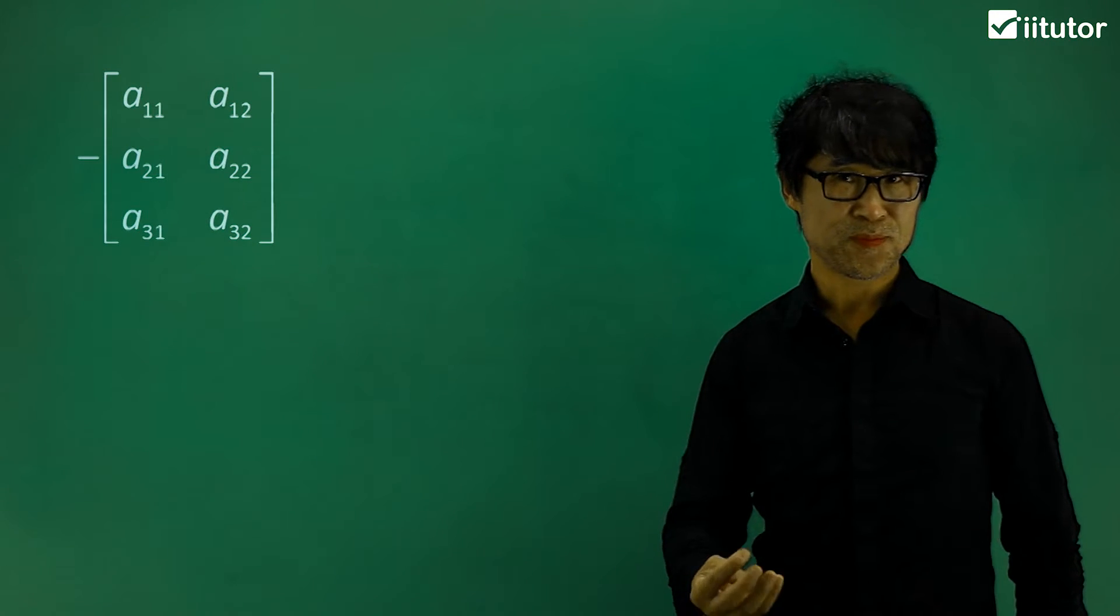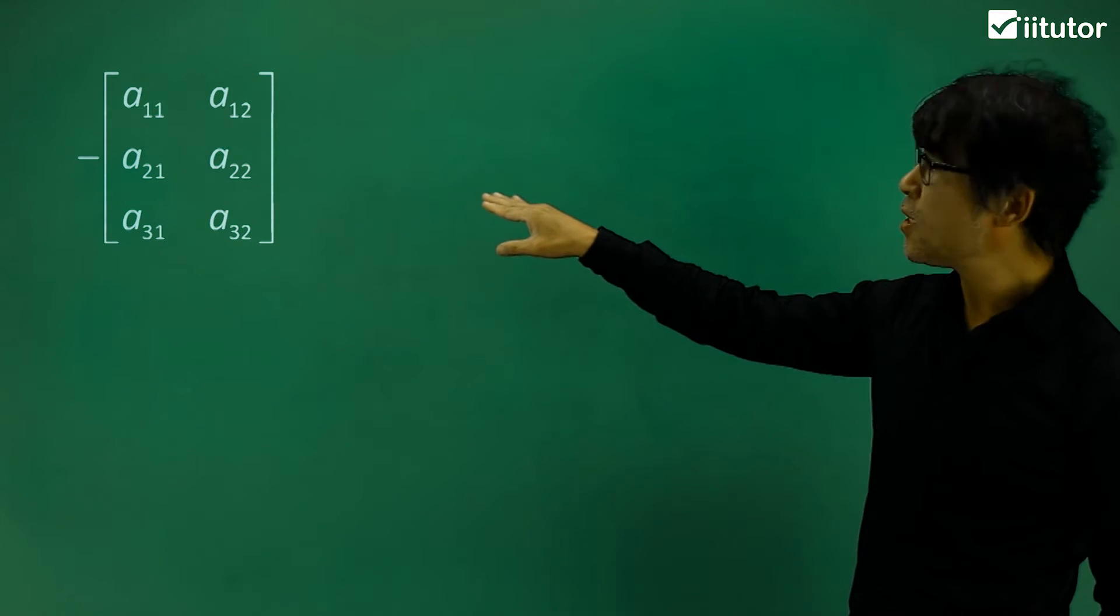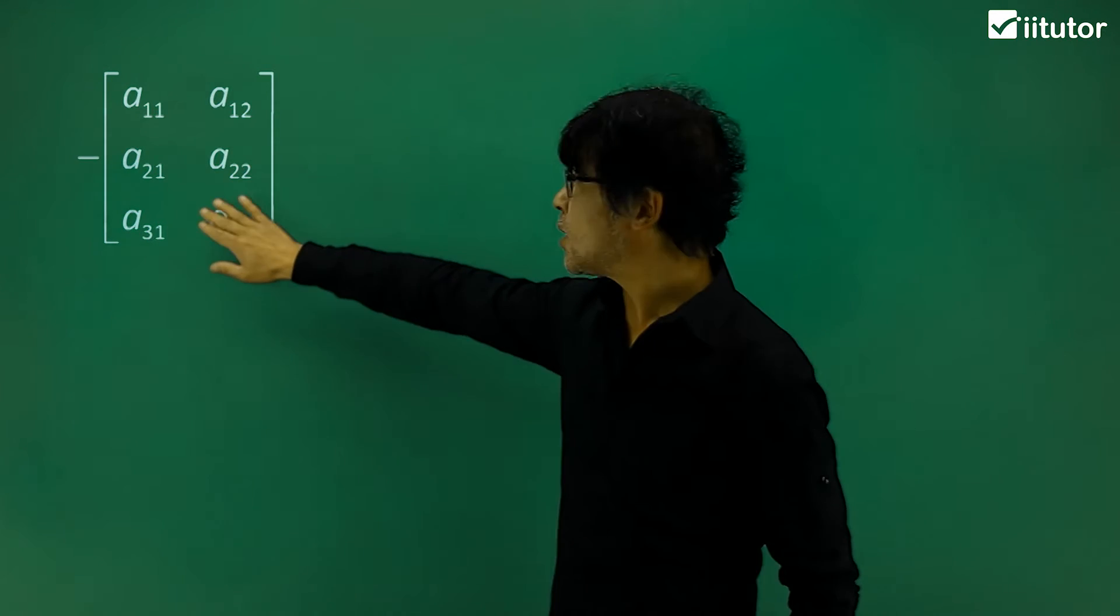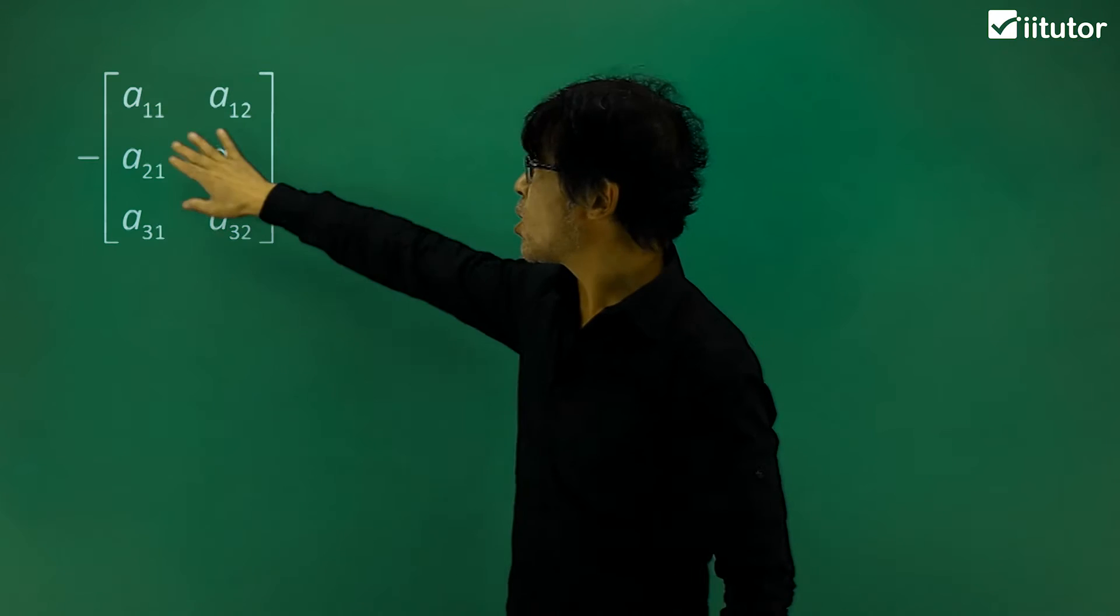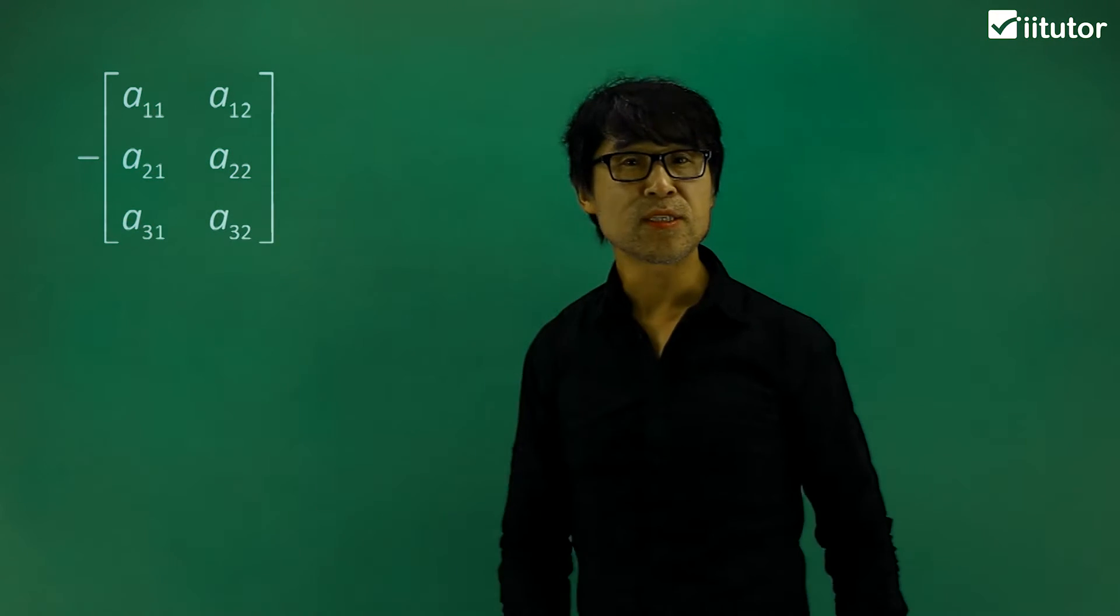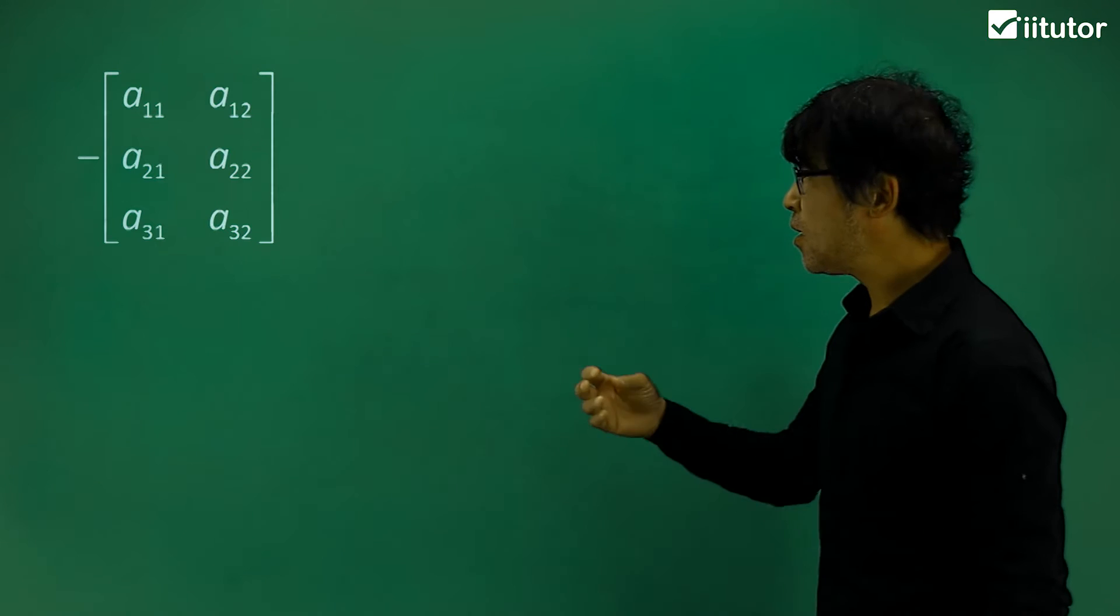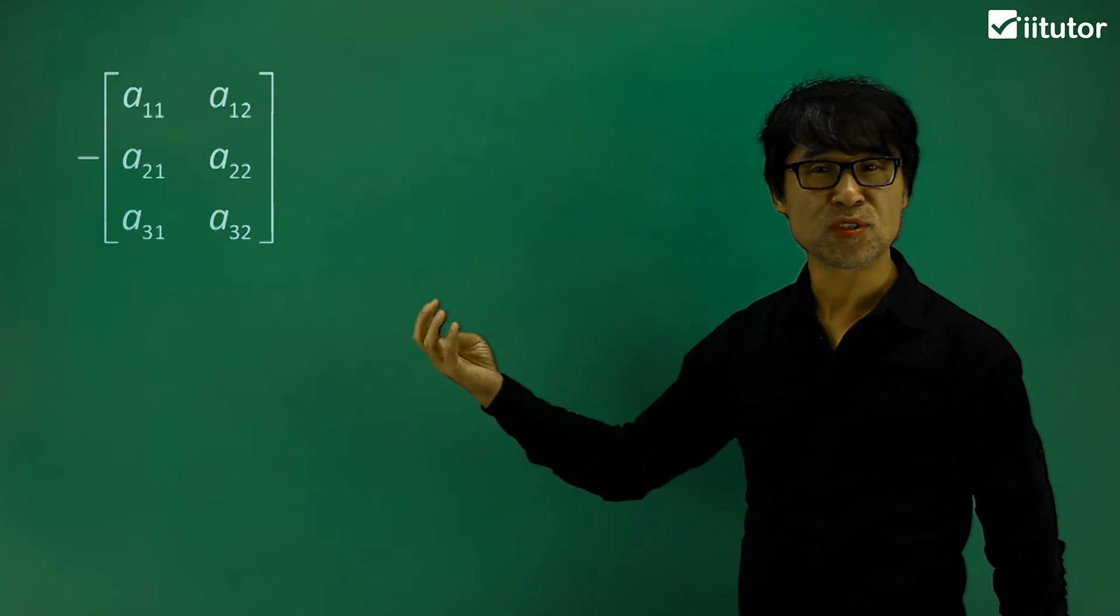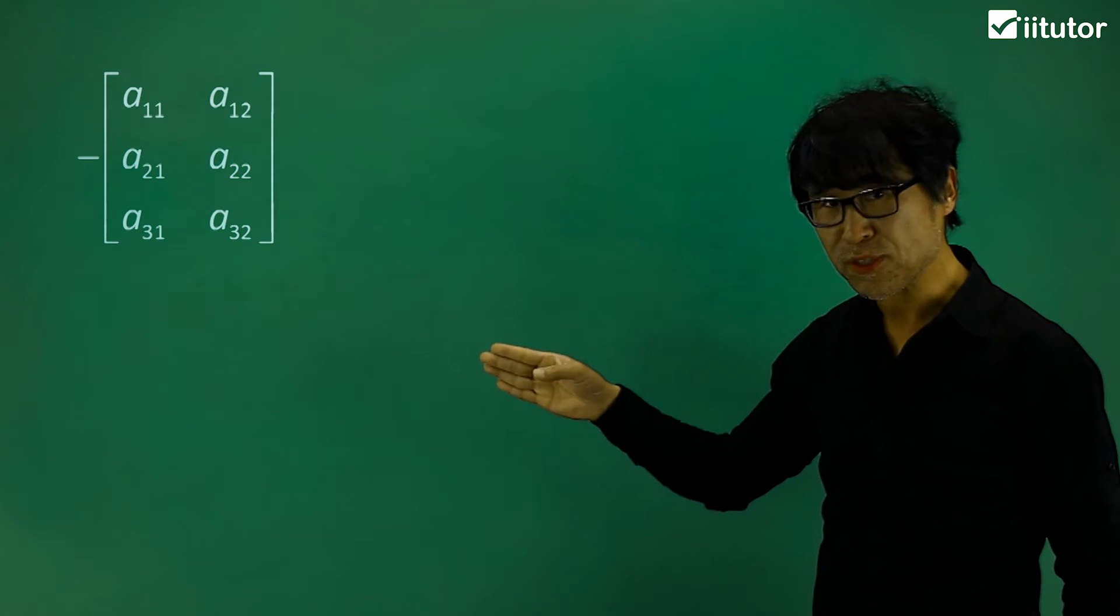Negative matrix. As you can see the example on the board, we have a matrix with six elements in a 3 by 2 matrix. We just times by negative. It is kind of scalar multiple of a matrix to a matrix over here.